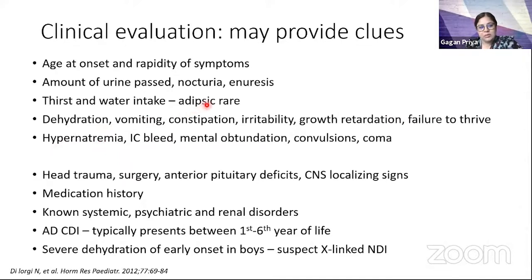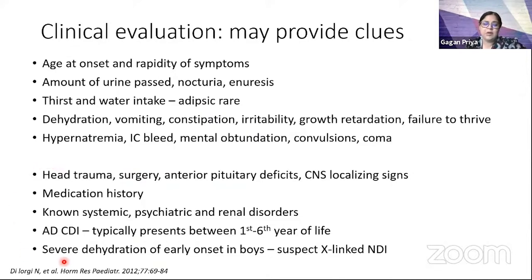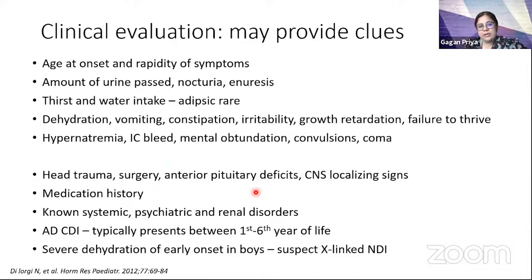Severe cases, especially those with adipsia, may have hypernatremia, mental obtundation, and intracranial bleeds. We should also look for causes of DI in the history: head trauma, post-surgical polyuria, anterior pituitary deficits pointing toward pituitary or hypothalamic tumors, inflammatory or granulomatous causes, and CNS localizing signs such as cranial nerve palsies.